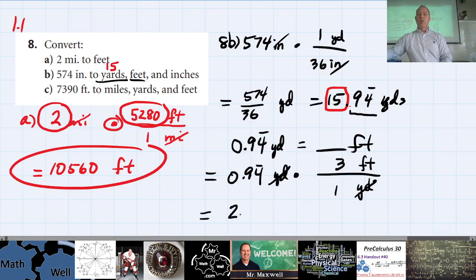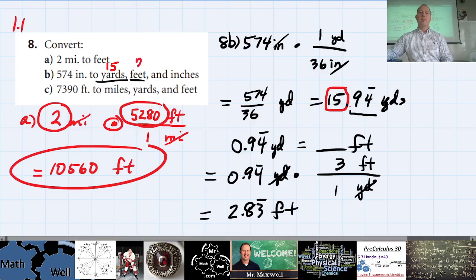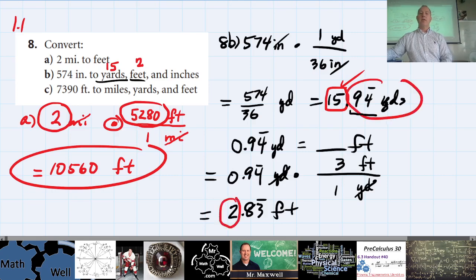So 2.8̄3̄ repeating feet — we have 2 full feet. So far: 15 full yards, and this decimal gives us 2 full feet. Now I need to convert the leftover decimal portion of feet into inches.